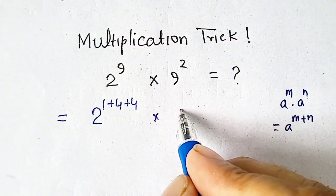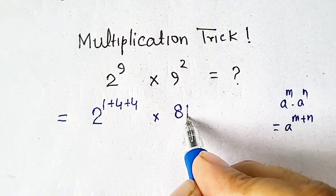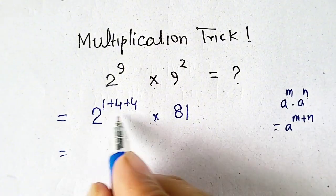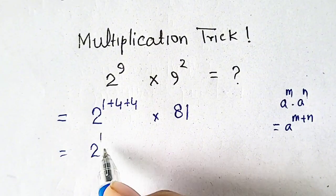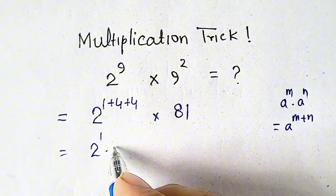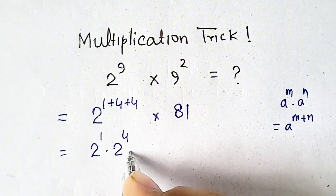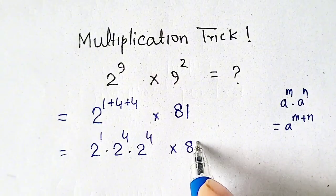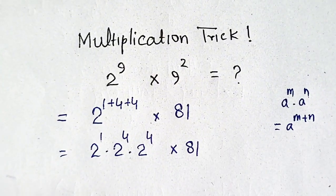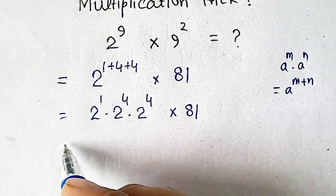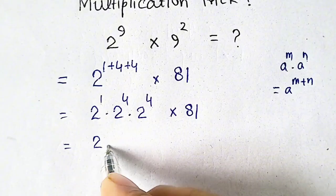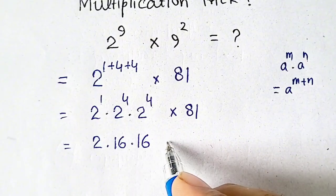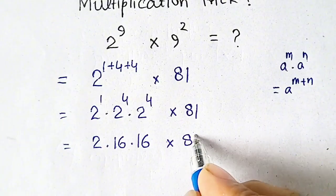9 squared is really simple and equals 81. Now we will apply this rule and split it: 2 to the 1 times 2 to the 4 times 2 to the 4 multiplied by 81. So 2 is written as 2 times 16 times 16 multiplied by 81.